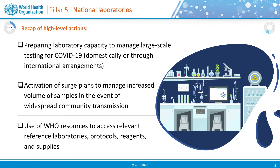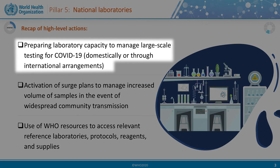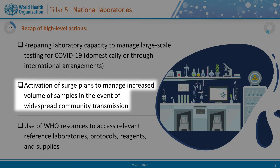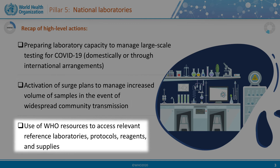In module 2, we covered several high-level actions of Pillar 5. Countries should prepare laboratory capacity to manage large-scale testing for the virus causing COVID-19, and if testing capacity does not exist at national level, samples can be sent to a regional or international referral laboratory with appropriate capacity. We also noted that in the event of widespread community transmission, surge plans should be activated to manage the increased volume of samples from suspected cases. WHO can provide support to access relevant referral laboratories, protocols, reagents, and supplies.